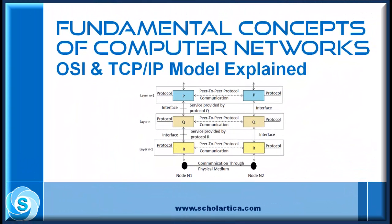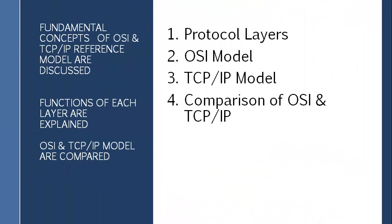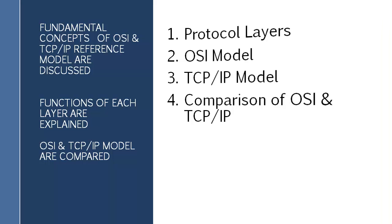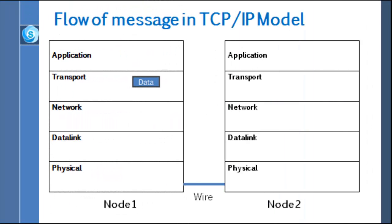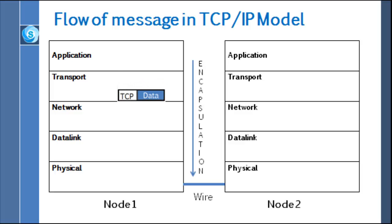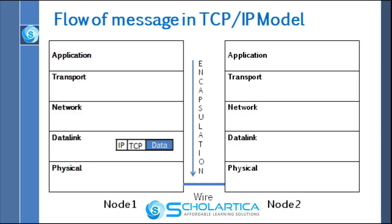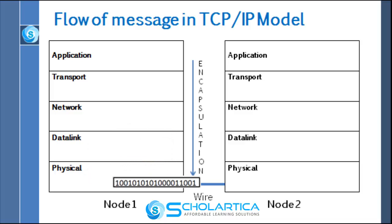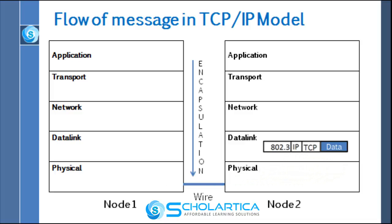Welcome to the second part of fundamental concepts of computer networks. In this lecture, you are going to learn about how data is transmitted from one computer on one network to another computer in another network through cables or wireless media. We will give you a broad overview of both OSI and TCP/IP reference models, which attempt to describe how data communication takes place. Finally, we will compare both models.